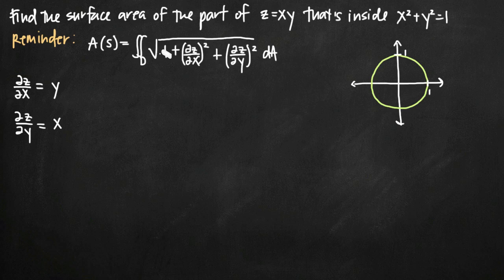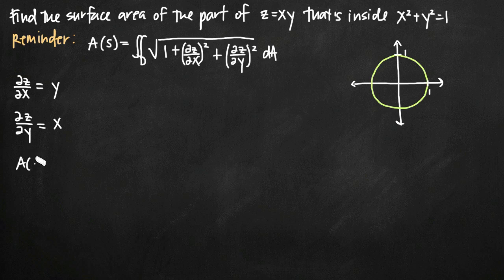Now we can plug both of those into our double integral in place of the partial derivatives. We need upper and lower limits of integration for both x and y. Because we have the circle x squared plus y squared equals 1, the graph is just the unit circle with radius 1 from the origin. We can treat this as a type 1 region. The surface area will be equal to a double integral — I'll leave placeholders for the limits of integration and write everything else in.